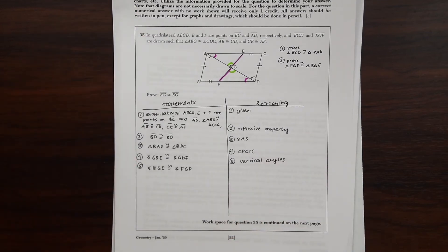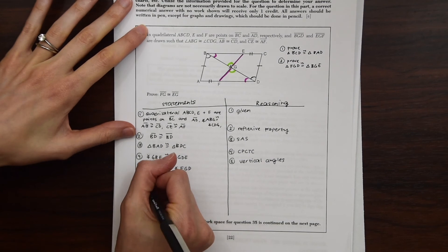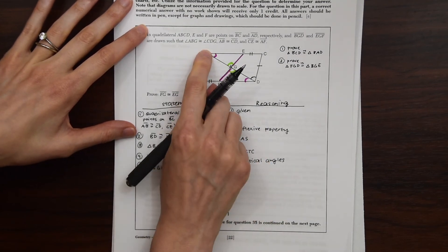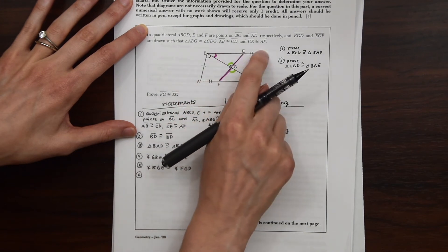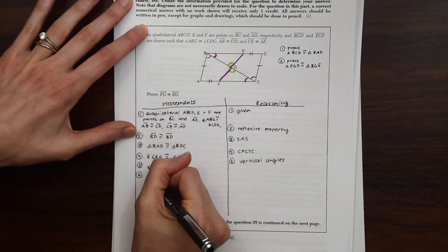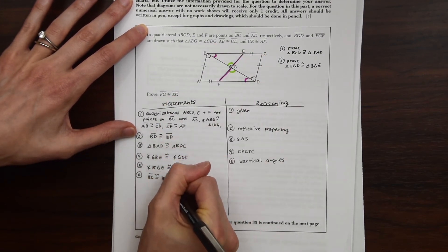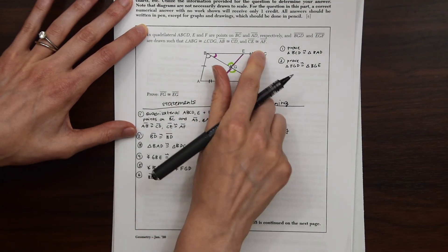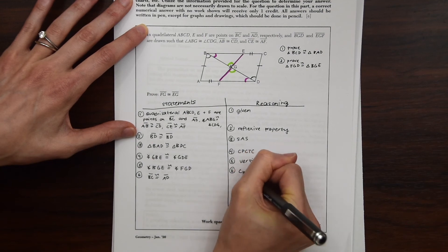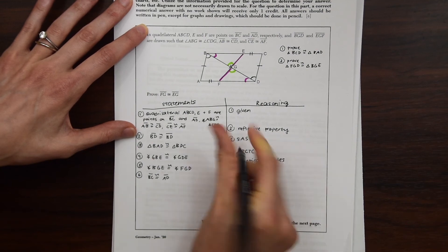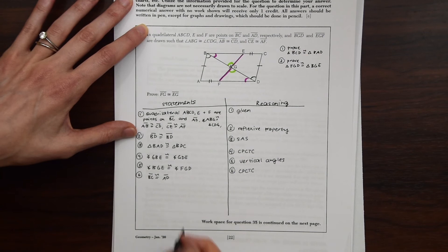And then the next part is a little tricky. We're going to be using some segment addition and segment subtraction. So we're going to start off by talking about those first triangles we proved congruent. So we're going to talk about these sides here. So we know that BC is congruent to this whole side, AD. And we know that because of CPCTC, from proving those other two triangles congruent already.